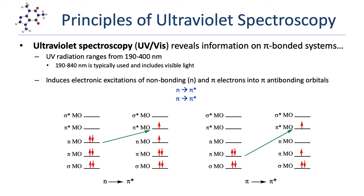Because both possible excitations require that an electron end up in a pi-star orbital, only organic molecules with pi bonds can actually be analyzed with UV-Vis spectroscopy, and that really limits its utility as an analysis tool.